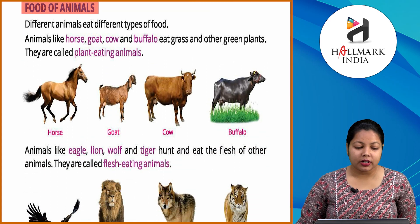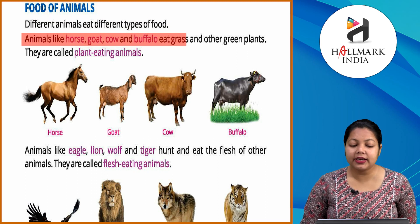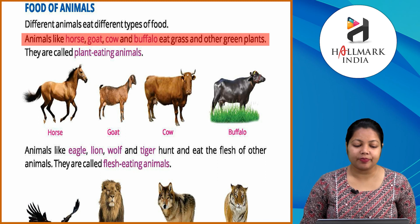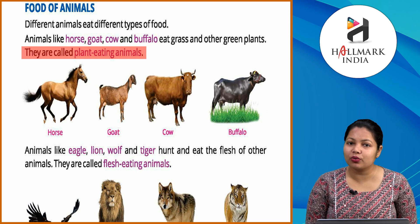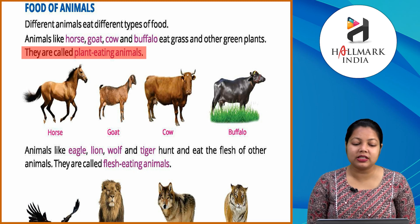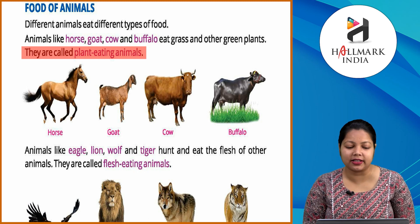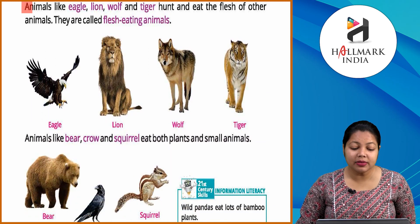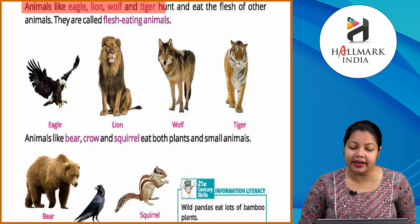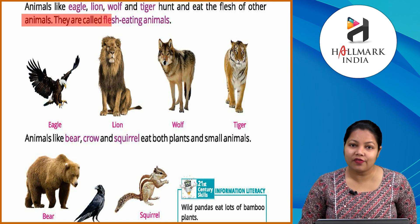Food of animals. Different animals eat different types of food. Animals like horse, goat, cow and buffalo eat grass and other green plants. They are called plant eating animals. Different types of animals eat different types of food — animals like horse, cow, goat, buffalo.